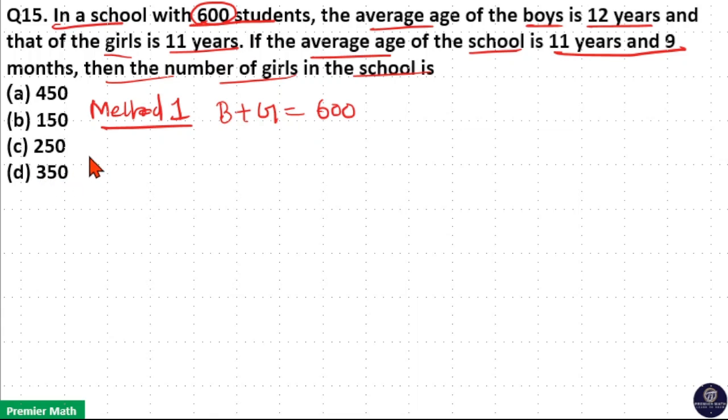In that case, take the difference between average and average of boys. Then, take the difference between average and average of girls. Here, average is 11 years and 9 months and average of boys is 12 years. So, 11 years 9 months minus 12 years. Here, average of girls is 11 years. So, 11 years 9 months minus 11 years.